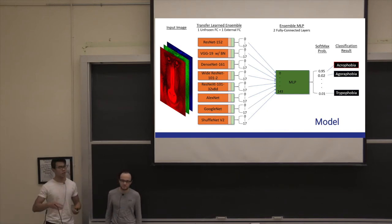Each of these transfer models are fine-tuned to our dataset with their last layer unfrozen as well as an external fully connected layer attached. Each transfer learning model is then independently trained on the training set to output a classification vector. Classification vectors from all eight ensembles are concatenated together and passed as input to a separate multi-layer perceptron that is then separately trained. The output of this MLP, composed of two fully connected layers, is then softmaxed to represent the probabilities of the phobia being in the image.